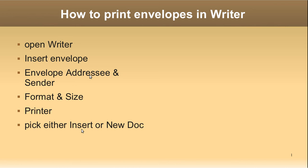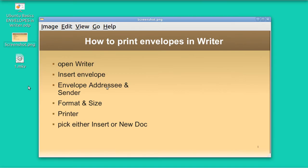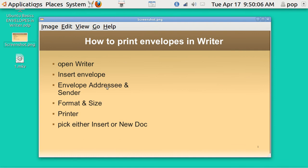Afterwards, when you are done with all three, you've got two options. You can either insert the envelope into the document you are writing, such that when you save the document you will only have one file name — the letter and the envelope saved together under one name. Or, if you select New Document, you will be saving the envelope as a file name by itself and the letter as a name by itself. I am now going to open up Writer and show you how it works.